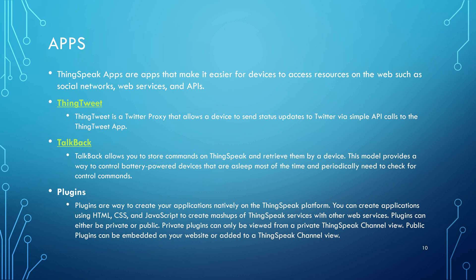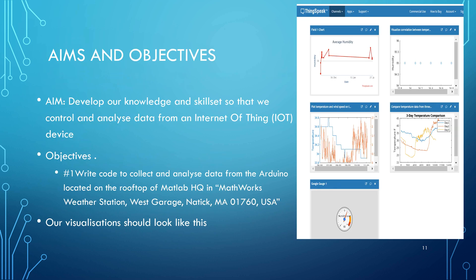The aims and objectives: as we saw at the very beginning, we want to create a channel and get these four charts up and then get that Google Gauge up. The aim is to communicate with an IoT device, and the objectives are to write code to collect and analyze data, and then create visualizations, which we'll look at on the right.